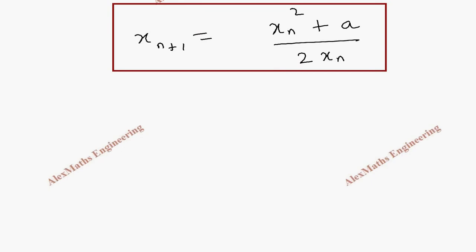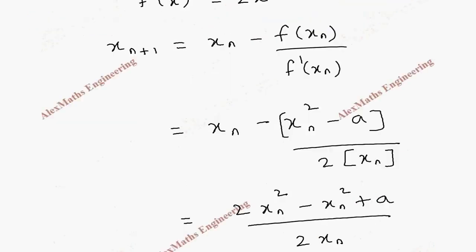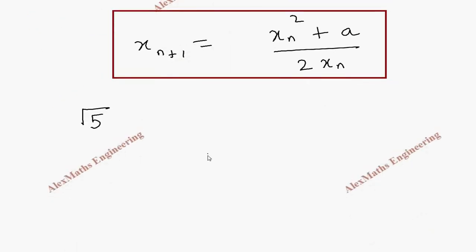Now we are going to find the value of square root of 5. If I substitute the value of a as 5 here, we get f of x as x square minus 5. So I take f of x here, which is x square minus 5. If I find f of 2, which is 4 minus 5, minus 1, and f of 3, which is 9 minus 5 and it is 4, we notice it is changing from negative to a positive value.